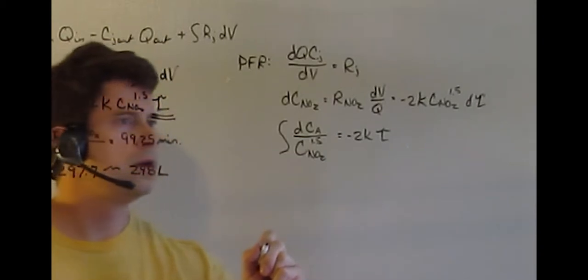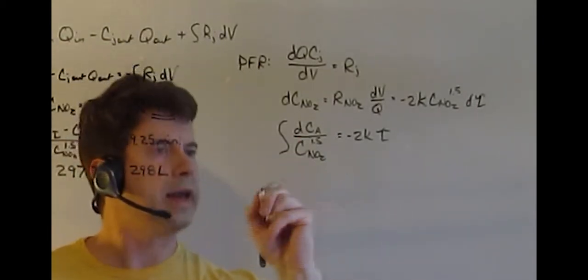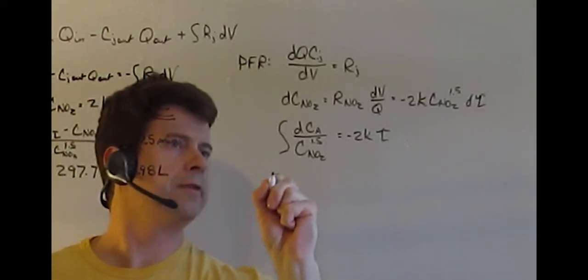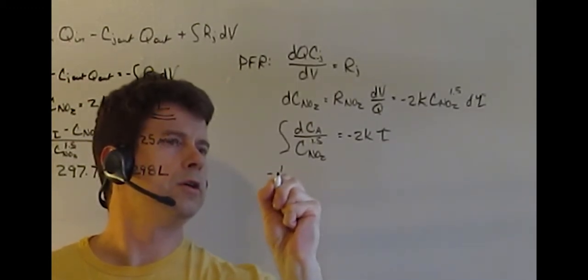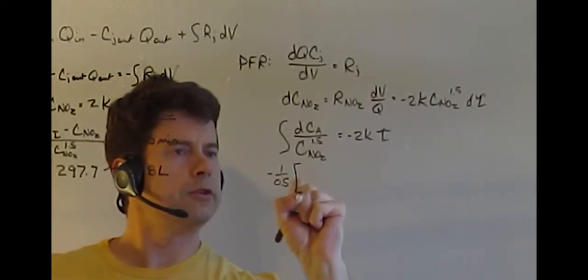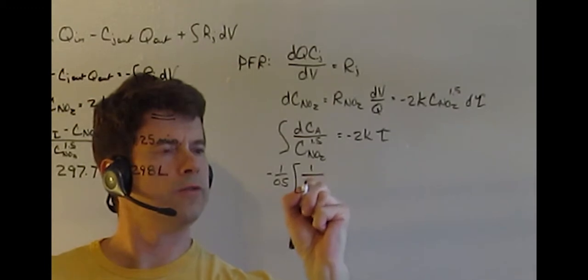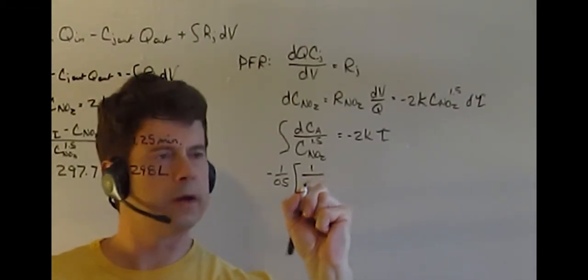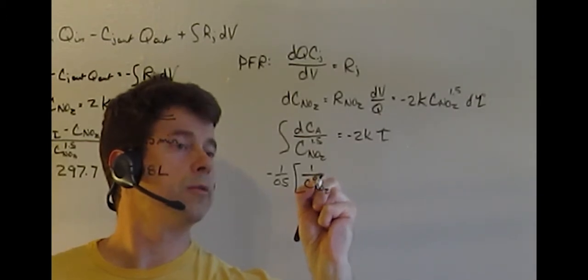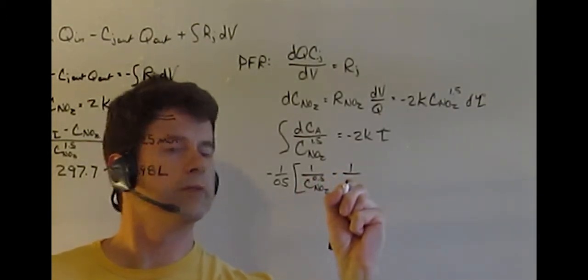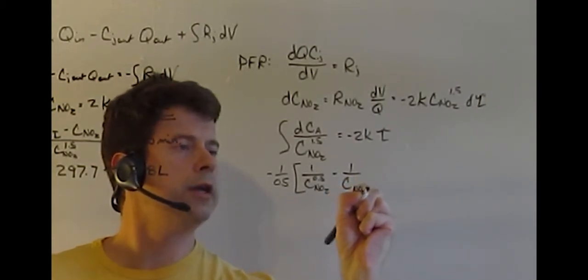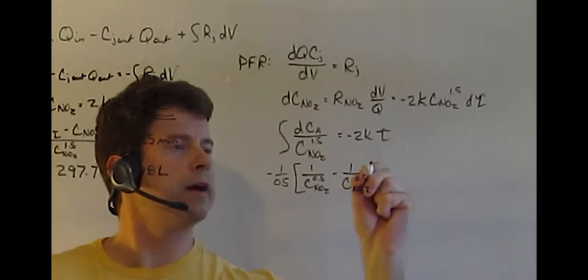You can solve that. Now we need to integrate, so this comes down to negative 1 over 0.5 times, we now have 1 over, this is doing it from CNO2 now 0.5 minus 1 over CNO2 initial 0.5,